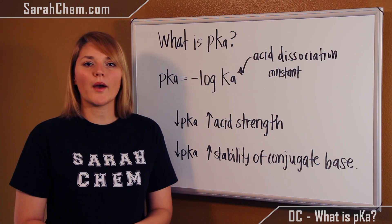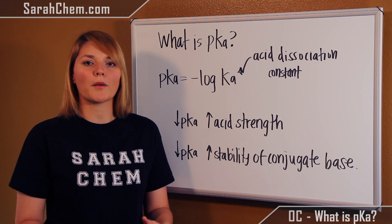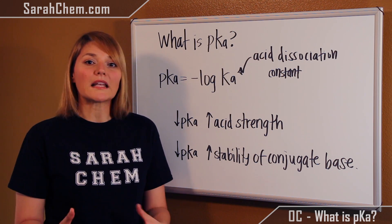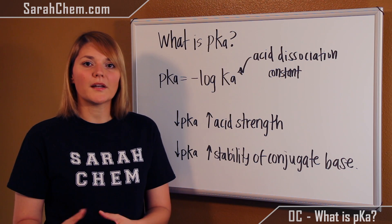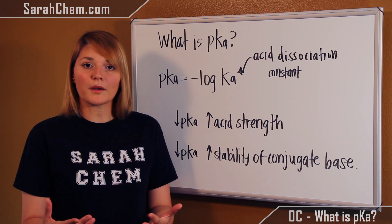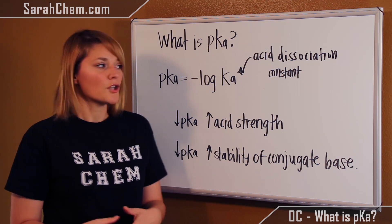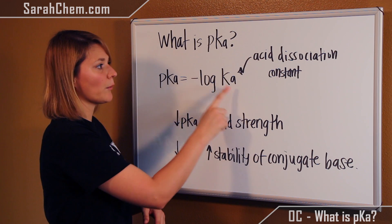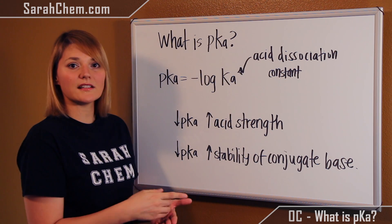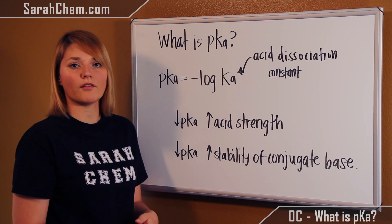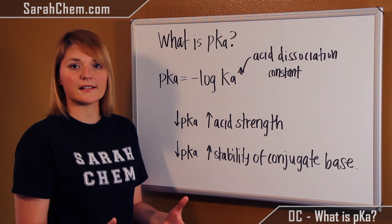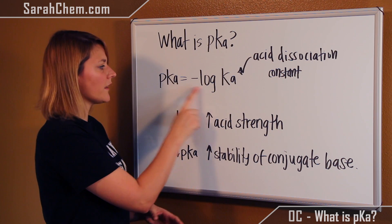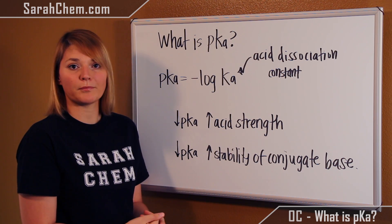For example, if you had a number like 1.8 times 10 to the minus 5, that doesn't mean a whole lot, but if I said 3, that would mean a lot more. So what we're going to do is take the Ka, which is the acid dissociation constant of a particular acid, and we're going to take the negative log of it, and that will give us the pKa.